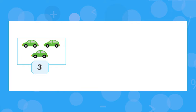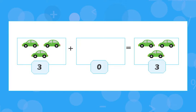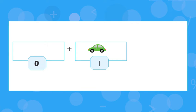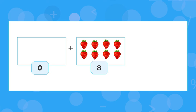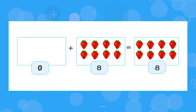Three cars plus zero is three cars. Zero plus one car is one car. Zero plus eight strawberries is eight strawberries.